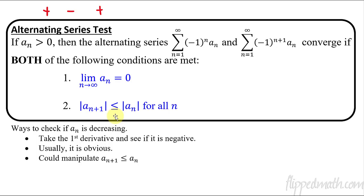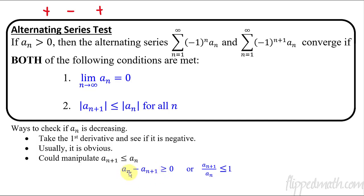How can you check that a(n) is decreasing? One way is to take the first derivative and see if it's negative — though I'd avoid that since it's the hardest, most cumbersome approach. Usually it's obvious: just plug in numbers and see that they keep getting smaller. Another way is to manipulate the expression. If the succeeding term divided by the previous term — a(n+1) over a(n) — creates a ratio less than one, that confirms it's decreasing.